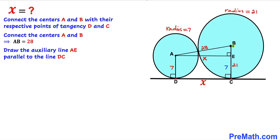We know that the full radius BC is 21 units and EC is 7 units. So the length BE is going to be 21 minus 7, which equals 14 units.